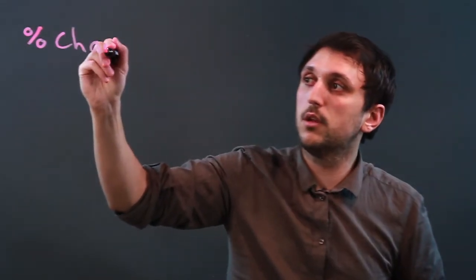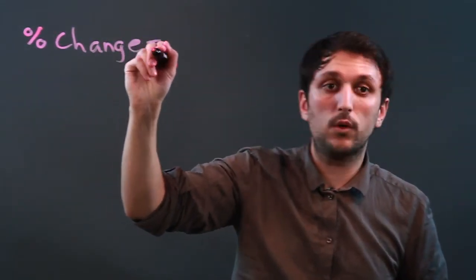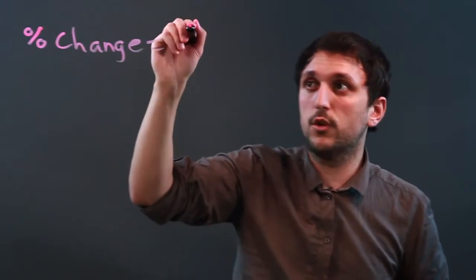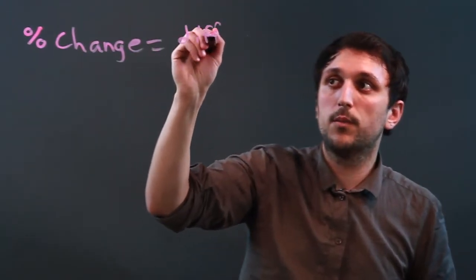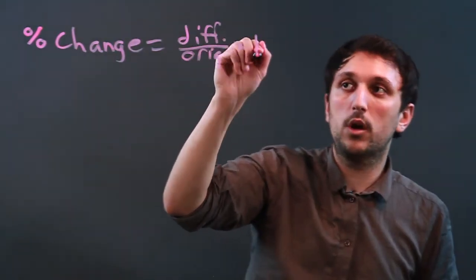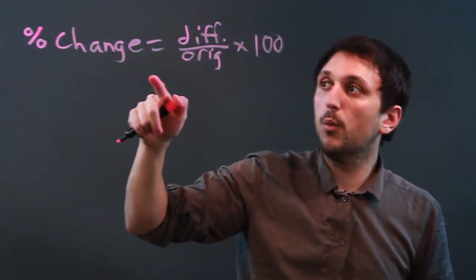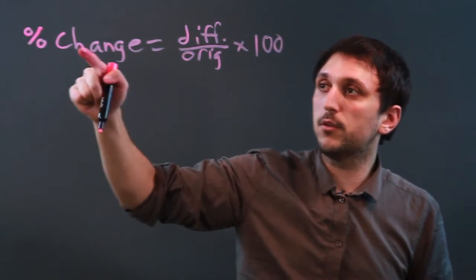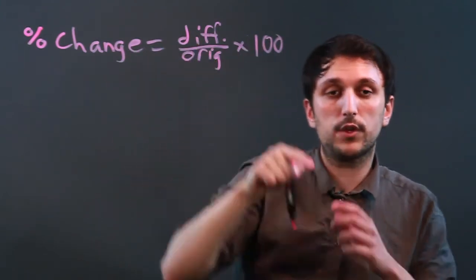What you need to learn is the percent change formula. The percent change formula is percent change equals the difference over the original, which I'm going to write as diff over orig times 100. So what we have is percent change is the difference over the original times 100.